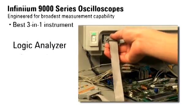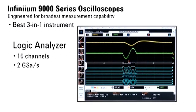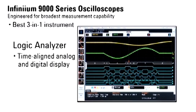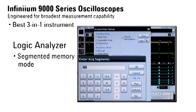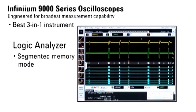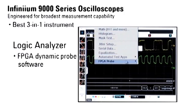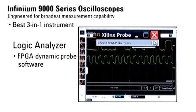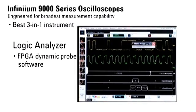Adding MSO capability to your scope lets you capture and view four analog channels of acquisition along with 16 integrated logic analysis timing channels, for accurate analysis of timing relationships between control signals and data buses. Segmented memory mode efficiently preserves the scope's acquisition memory to capture bursts of signal activity separated by long dead times — Agilent offers the only MSOs with segmented memory across both digital and analog channels. The MSO-based FPGA dynamic probe application allows you to quickly import signal names from your design environment and move between banks of internal FPGA signals without recompiling your design for fast and efficient debug.